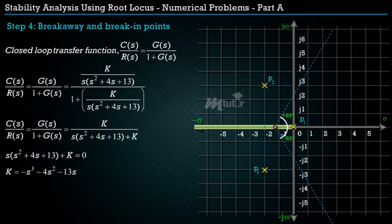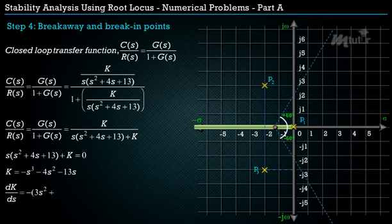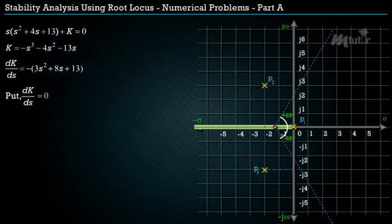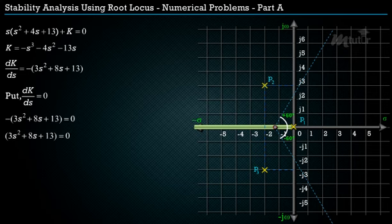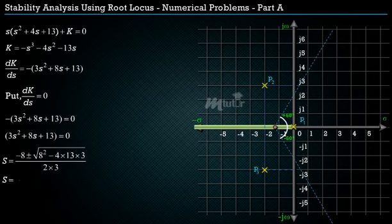Differentiating K with respect to s gives dK/ds = −(3s² + 8s + 13). Setting dK/ds = 0 and rearranging, then applying the quadratic formula, we get s = −1.33 ± j1.6.